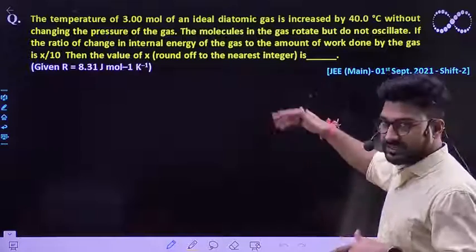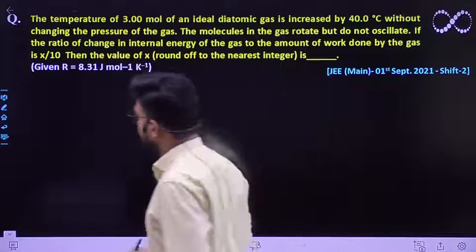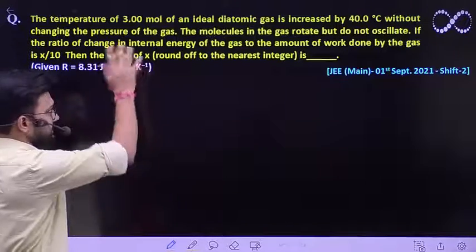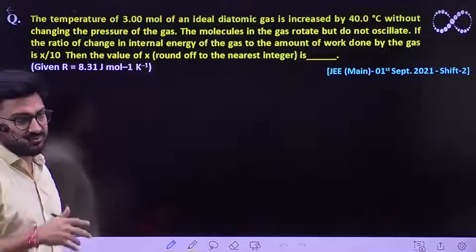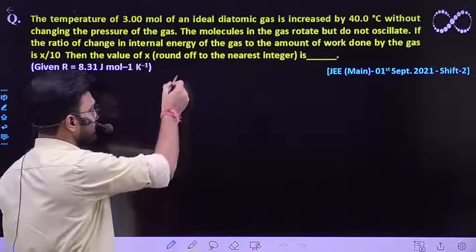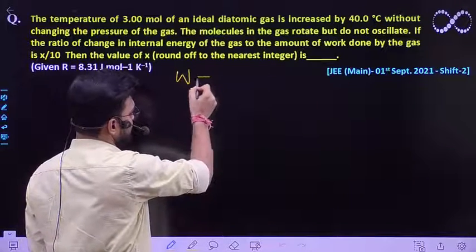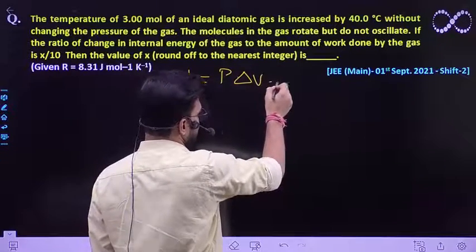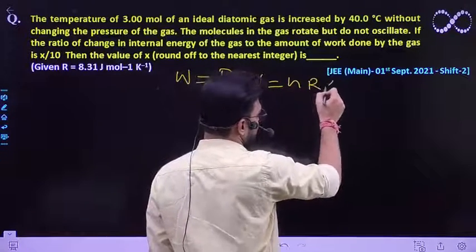We already know that since it is an isobaric process where pressure remains constant, the work done by the gas is given by relationship W is equal to P delta V which is nothing but nR delta T.